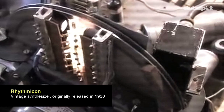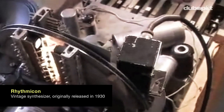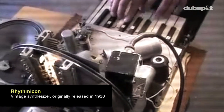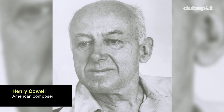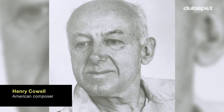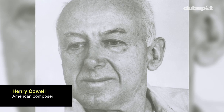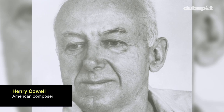The one pretty much considered the first rhythm machine was something called the Rhythmicon. It was created by Leon Theremin — the guy that made the Theremin instrument — and he made it in response to a request by composer Henry Cowell, because Cowell was trying to work with odd time signatures and wanted a machine that would do this automatically. Here's a video I found of an old Rhythmicon.